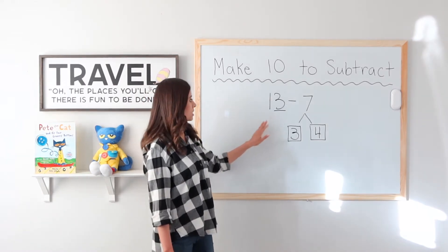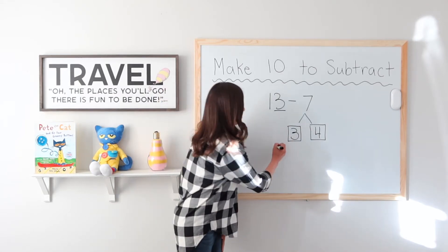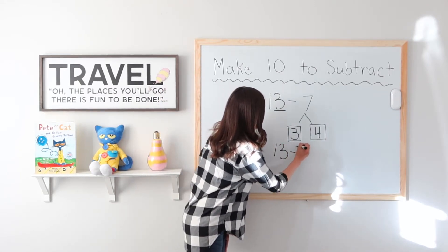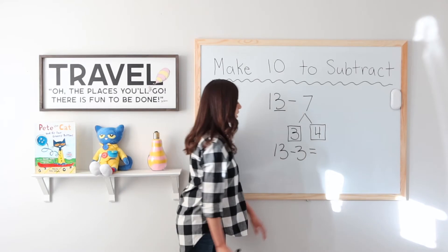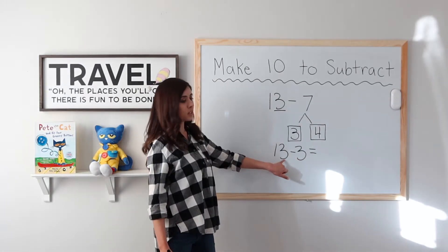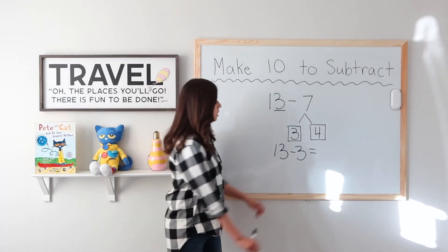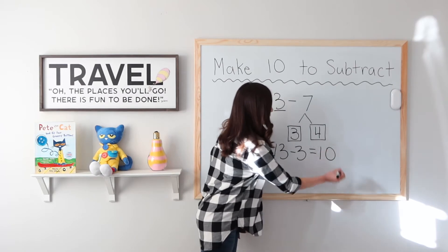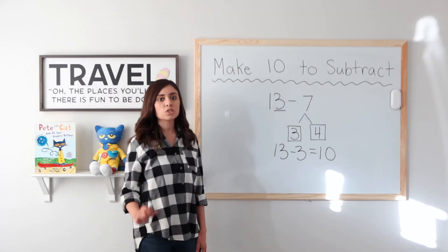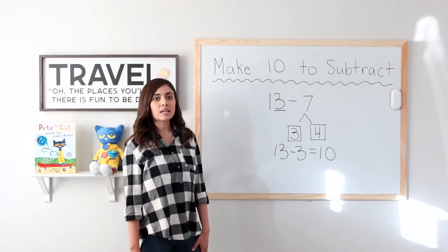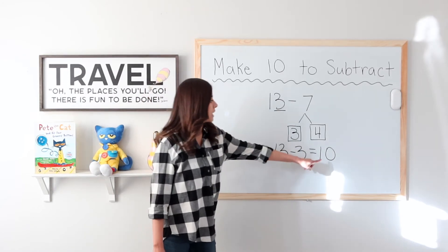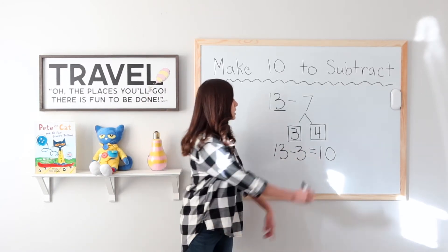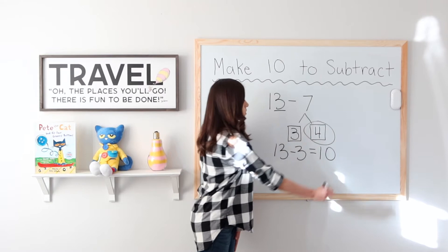So step 2 was to subtract 13 minus 3. And we already know that the 3 cancels out this 3 and makes it a 0. So we have 10. Step 2 is complete.